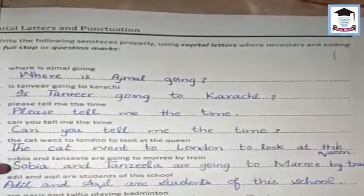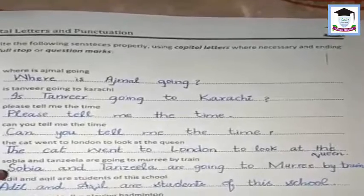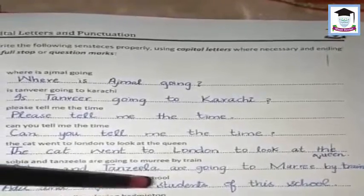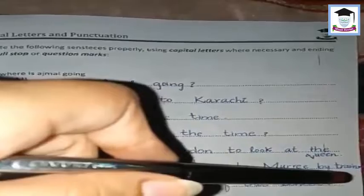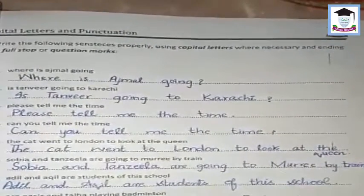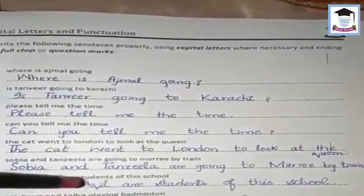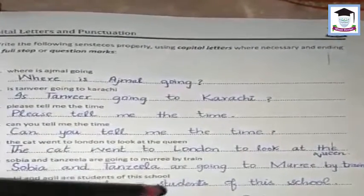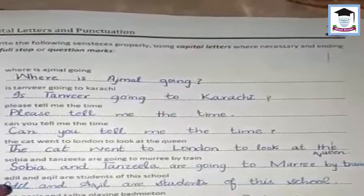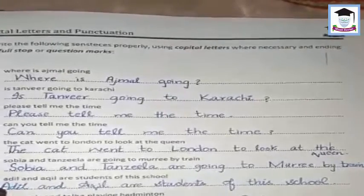The sixth sentence: 'Sobia and Tanzeela are going to Marie by train.' Sobia's 'S' is capital, Tanzeela's 'T' is capital, and Marie's 'M' is capital. At the end put a full stop.